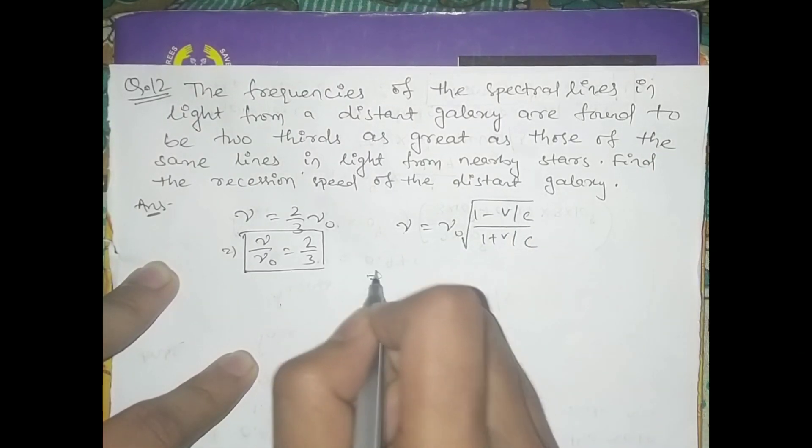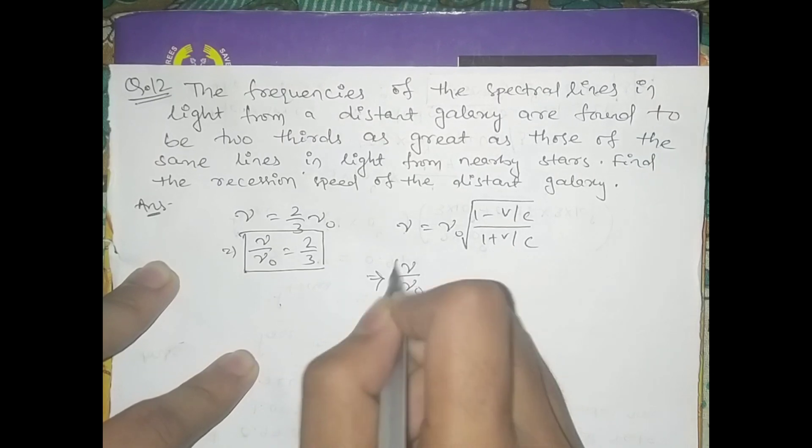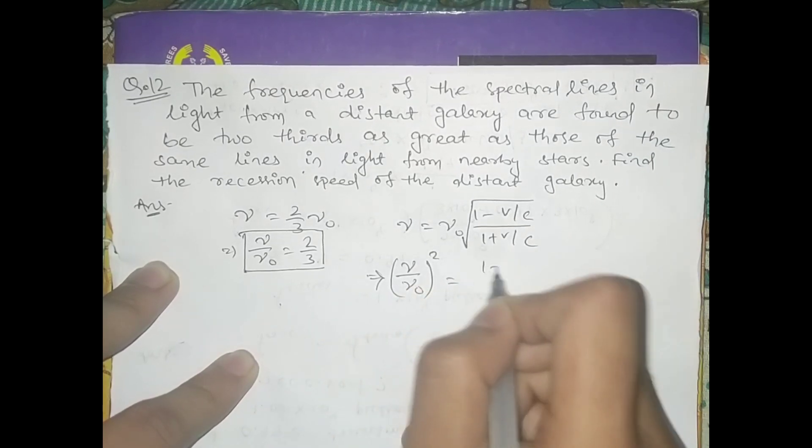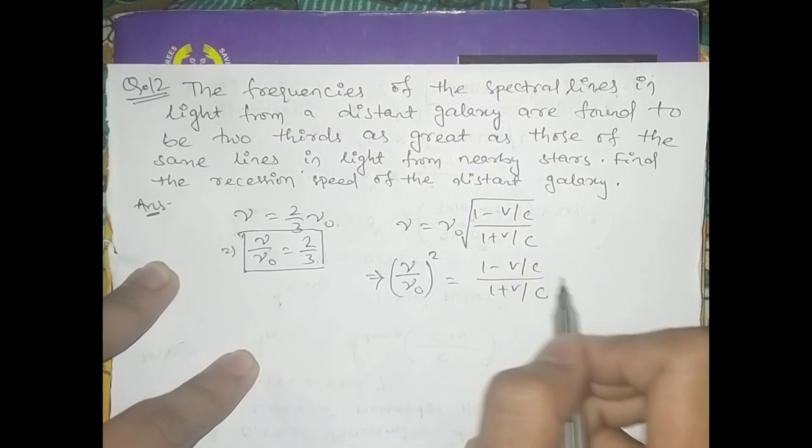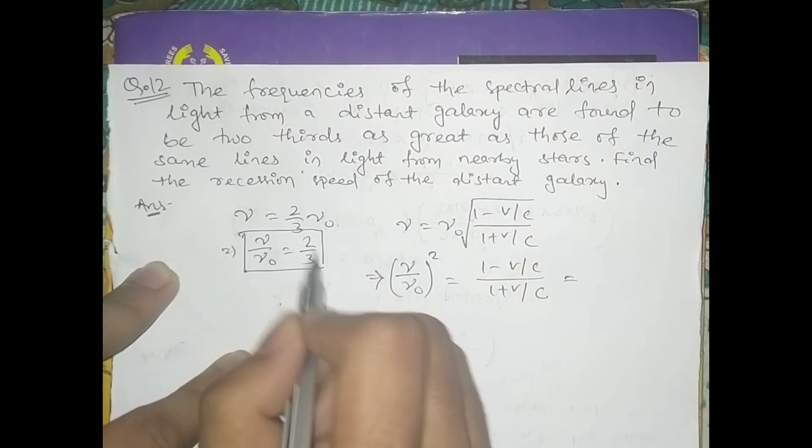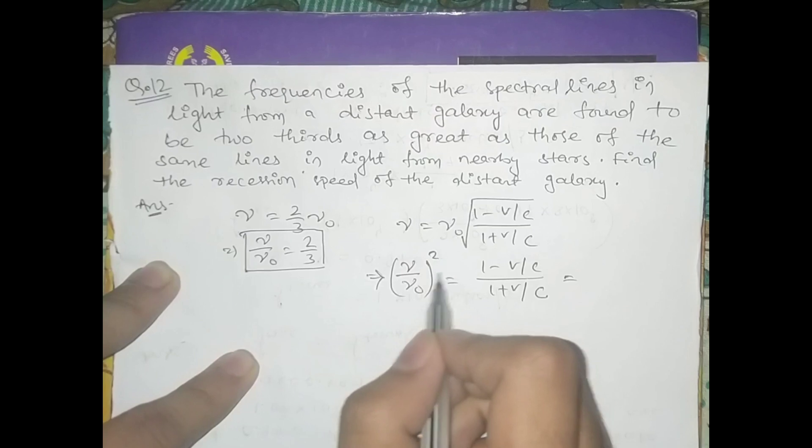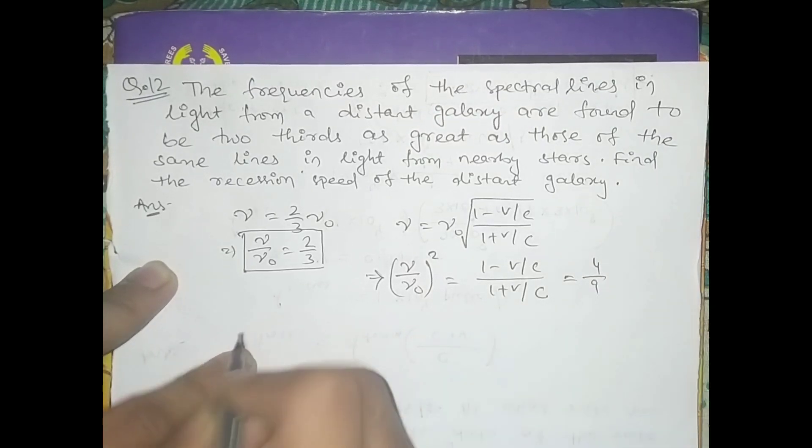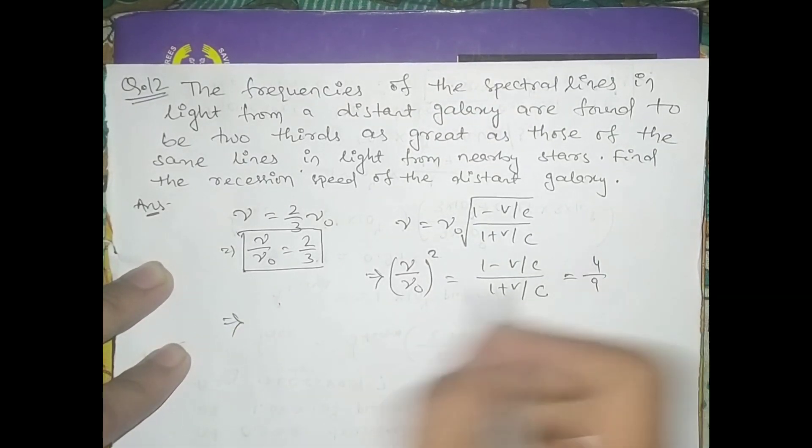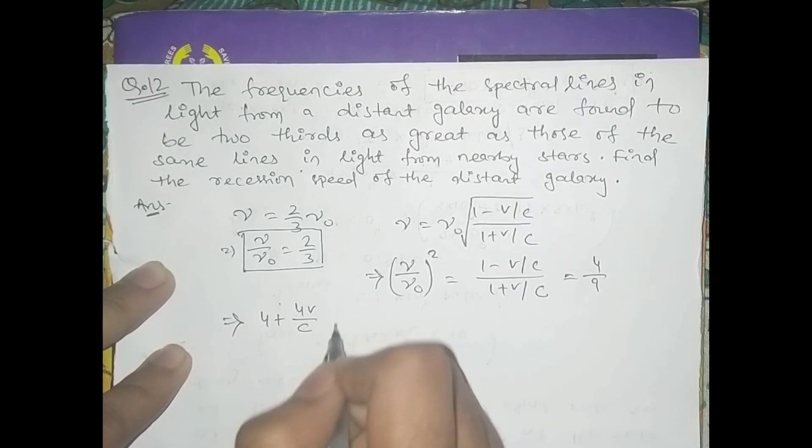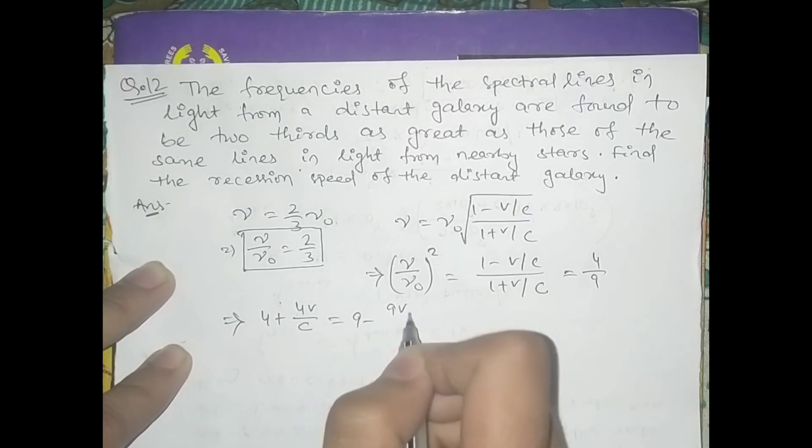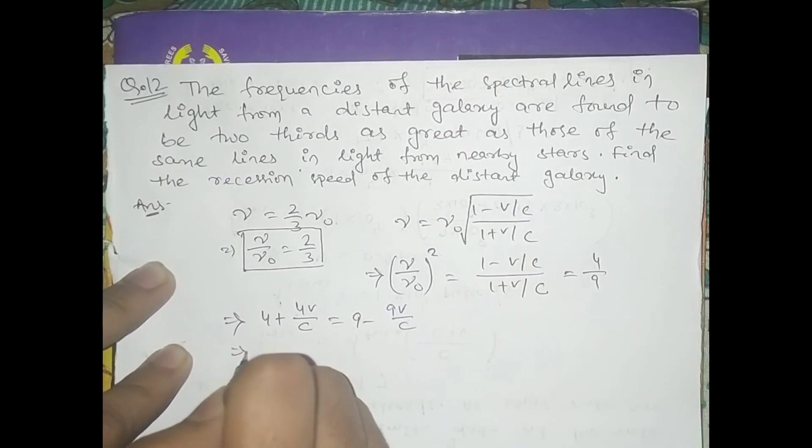Squaring both sides, we have (1 minus v/c) divided by (1 plus v/c) equals (nu by nu_zero) squared, which is (2/3)² = 4/9. This becomes 4 plus 4v/c equals 9 minus 9v/c.